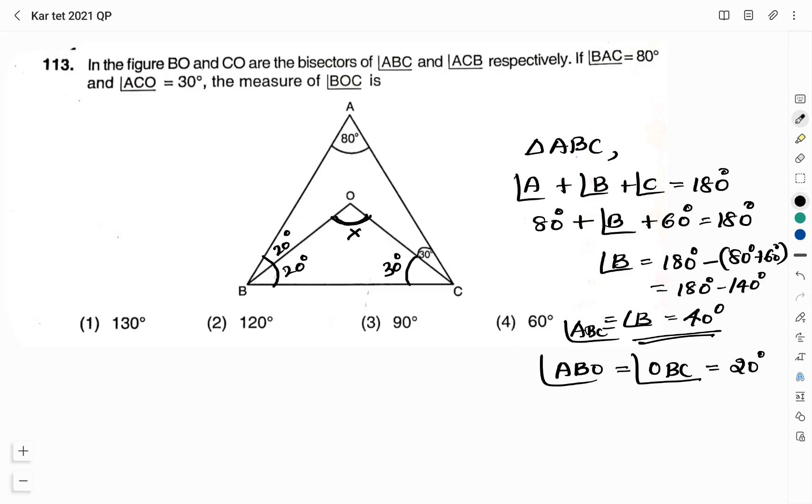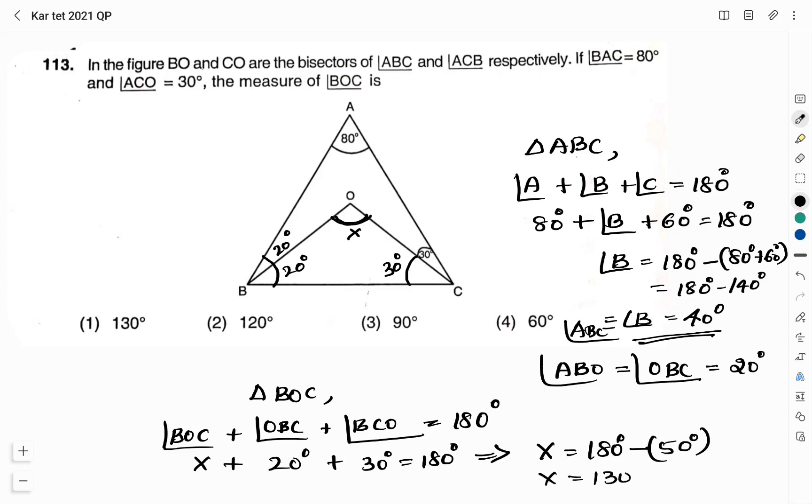We are asked to find what is angle BOC which I have indicated as X. In triangle BOC, we have the sum of angles. Angle BOC plus angle OBC plus angle BCO is equal to 180 degree. Angle BOC is what we have to find, it is X and angle OBC is 20 degree. BCO is 30 degree which is equal to 180 degree. This implies X is equal to 180 degree minus 50 degree. X is equal to 130 degree is the answer for angle BOC. Therefore, the right answer here is option 1: 130 degree.